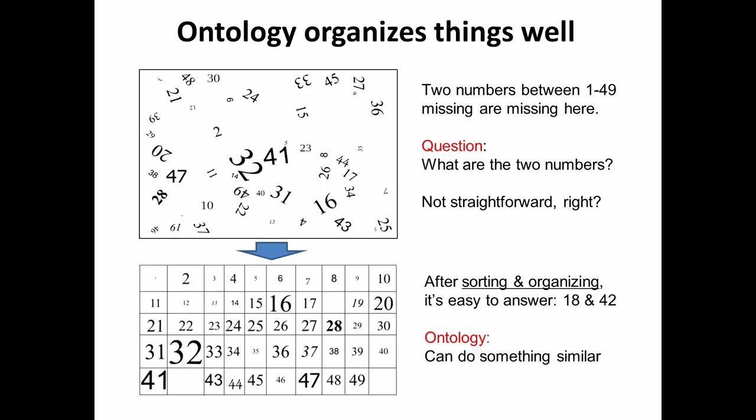However, if we sort and organize the data, you can clearly see that 18 and 42 are the two missing numbers. The patterns and sorting are different, but the size of the data is the same. Basically, what ontology does is the same thing — it tries to organize noisy, missing, or disorganized data together so we can have a clear view and use it for different applications.